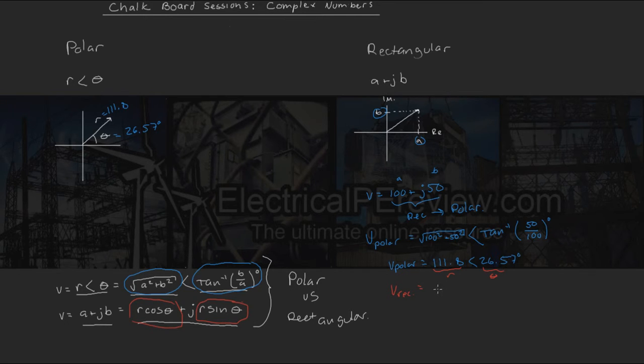So a, our real component of our rectangular vector, is going to be the same as our magnitude r times cosine of theta, which is 26.57 degrees.